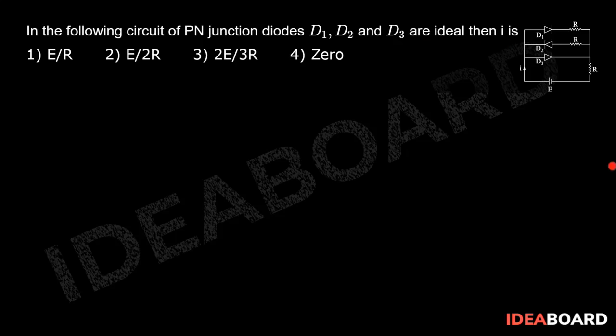We can see here the diode D2 is in reverse bias and the diode D1 and D3 are in forward bias condition. So diode D2 will act as an insulator and can be removed from the circuit.